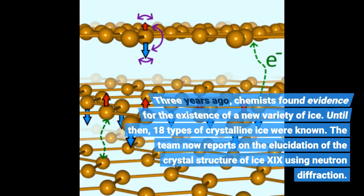Three years ago, chemists found evidence for the existence of a new variety of ice. Until then, 18 types of crystalline ice were known. The team now reports on the elucidation of the crystal structure of ice 19 using neutron diffraction.